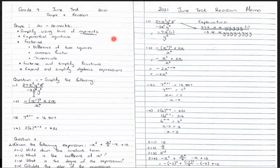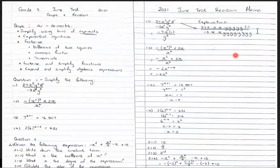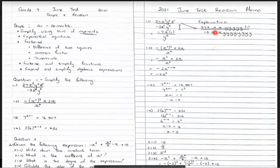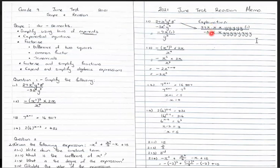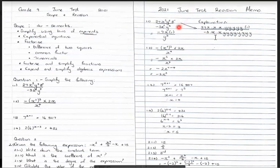On your left hand side you've got your question paper and on your right hand side is your memo. Question 1.1: we have 27x cubed y to the power 5, z to the power 0, all of that divided by negative 3x squared y to the power 8. I broke it down in case you did not remember your laws of exponents. Because x is cubed, you're going to multiply x by itself three times. Because y is raised to the power 5, you multiply y by itself five times. Z is to the power 0, so you multiply by 1.